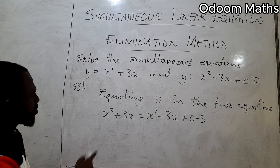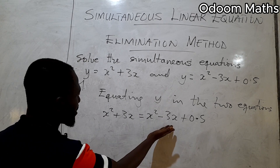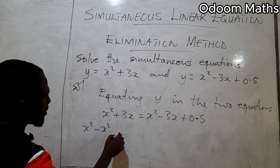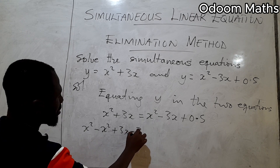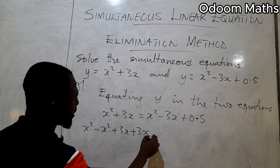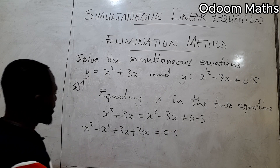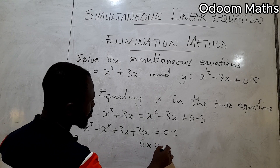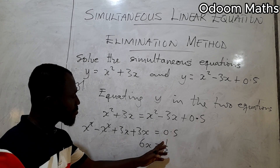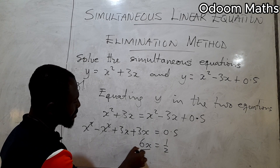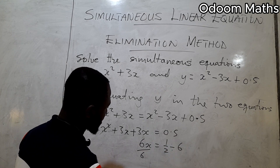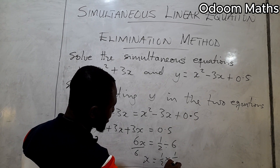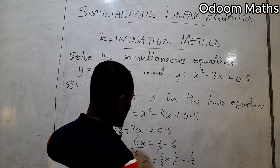We simplify by cancelling the x squared terms. Bringing the x-terms to one side: x squared minus x squared plus 3x plus 3x equals 0.5, which gives 6x equals 0.5 (or 1/2). Dividing both sides by 6: x equals 1/2 times 1/6, so x equals 1/12.